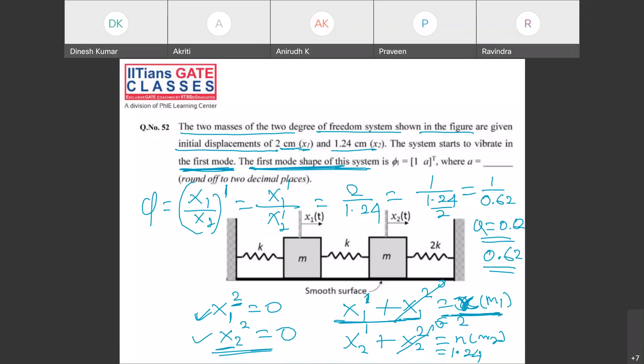My initial displacement of mass is X₁ corresponding to first mode plus X₁ corresponding to second mode. From here we got the value of X₁₁ and X₂₁. We know this first mode is X₁ by X₂ corresponding to first mode, which is X₁₁ upon X₂₁. So we got 1 by 0.62, so the unknown value A is 0.62.